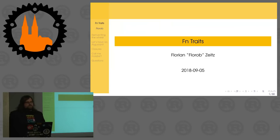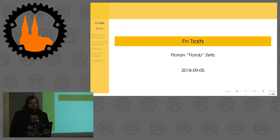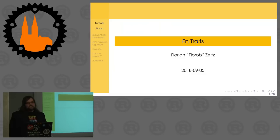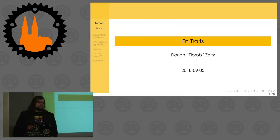So, FN traits. What are FN traits? FN traits is a family of traits defined in the standard library. Their purpose is basically defining an interface for things that are in one way or the other callable. If you want your object to be callable, you implement an FN trait for it — that's a bit of a lie, but we'll get to that. Also, closures and functions implement the FN traits automatically.